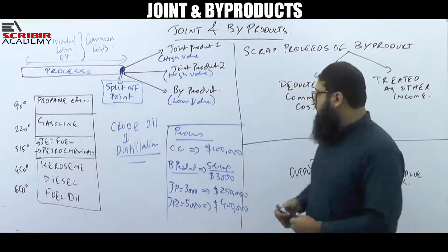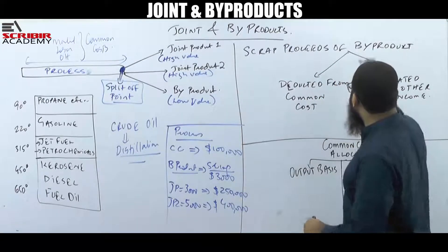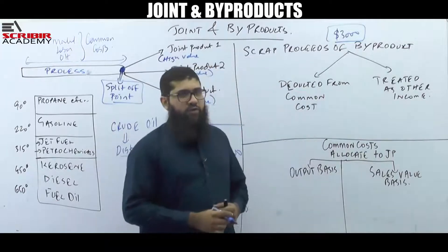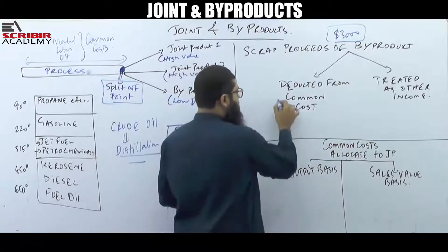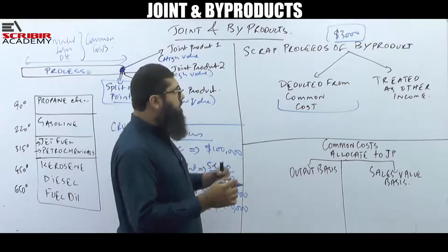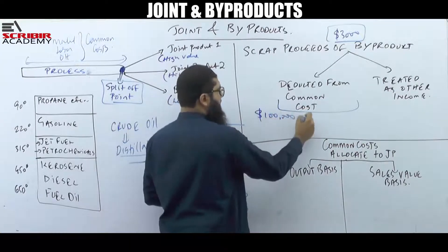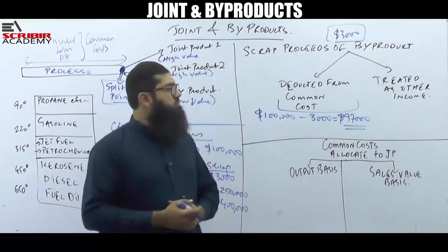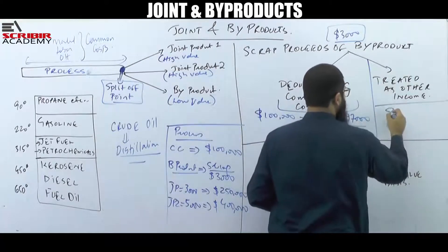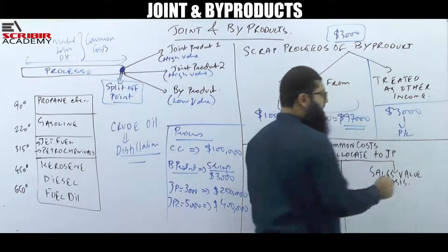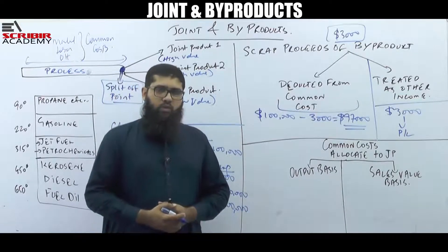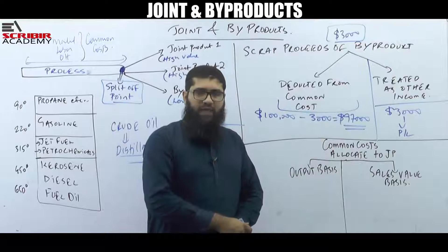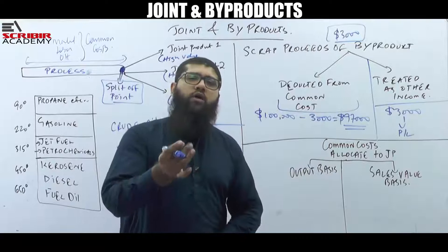The first thing to address is the byproduct with sale proceeds of $3,000. There are two ways of dealing with the sale proceeds of the byproduct. One option is to deduct them from the common cost — so the $100,000 common cost minus $3,000 gives $97,000 as the adjusted common cost to be dealt with. The other option is to treat it as other income by taking the $3,000 to your profit and loss account.